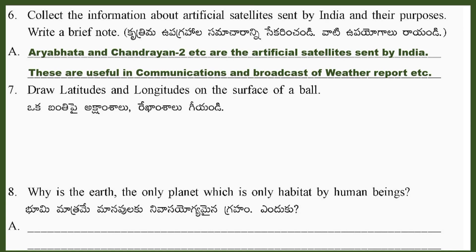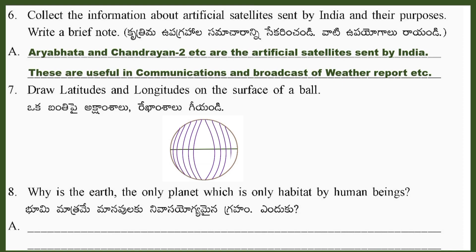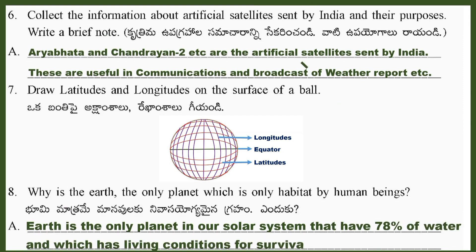Question 7: Draw latitudes and longitudes on the surface of a ball. Question 8: Why is the Earth the only planet inhabited by human beings? Answer: Earth is the only planet in our solar system that has 78% water and which has living conditions for the survival of human beings.